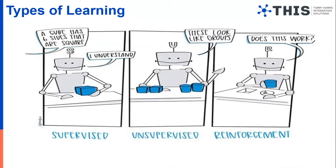Let's try to understand what is unsupervised learning. We can see from the example that the machine is having four objects — two cubical and two cylindrical objects — and it has grouped them together. There was no external supervision involved. The machine inspected all four objects and decided that two of them are similar, so it placed them together in one category. Then it inspected the other two and decided these two belong in a single category and grouped them together. This is unsupervised learning.